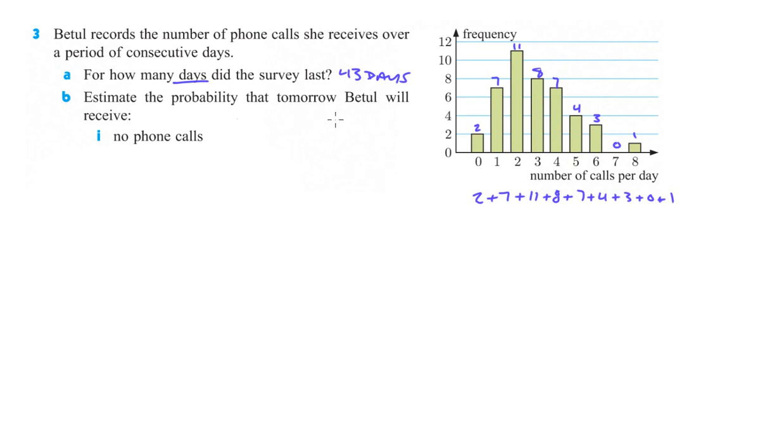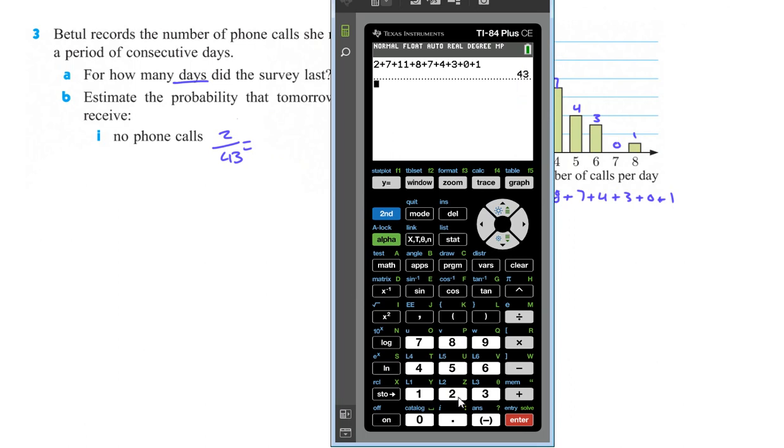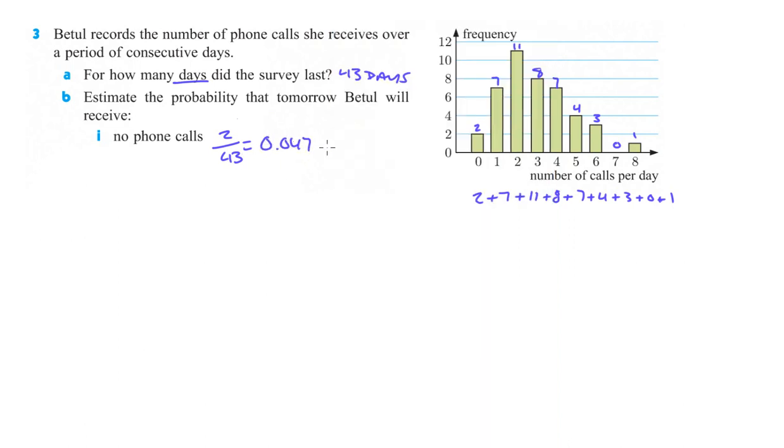And then for part B, estimate the probability that tomorrow Batool will receive no phone calls. So that happened 2 out of the 43 total possible days. So we'll just calculate what that percent is. 2 divided by 43 and we get 0.0465. So let's go 0.047 or 4.7% chance. Whichever one you want to go with, either way is fine.